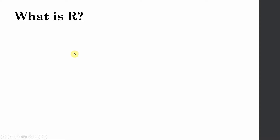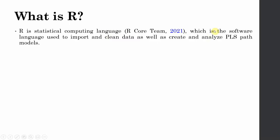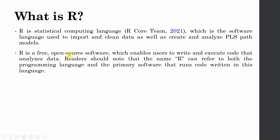So what is R? R is a statistical computing language — it is the software language used to import and clean data as well as create and analyze PLS path models. We are going to use R to write and create our PLS models. The advantage of R is that it is free and open source software.